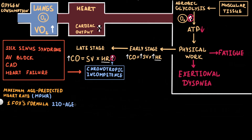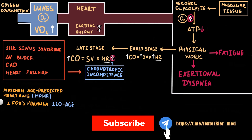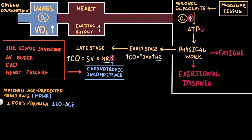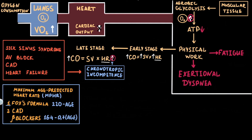Because the Fox formula was developed based on studies of middle-aged men, some of whom had coronary artery disease and were on beta-blocker therapy, it has limitations. It may overestimate maximum heart rate in younger persons and women, and underestimate it in older persons. For patients with coronary artery disease or those taking beta-blockers, the formula 164 minus 0.7 multiplied by age has been proposed. However, most studies still use the classic Fox formula.